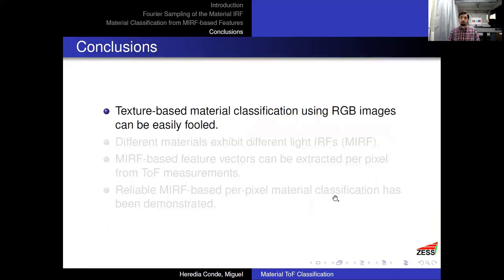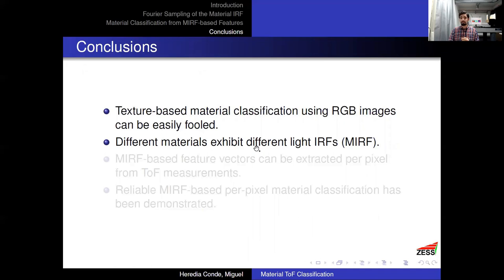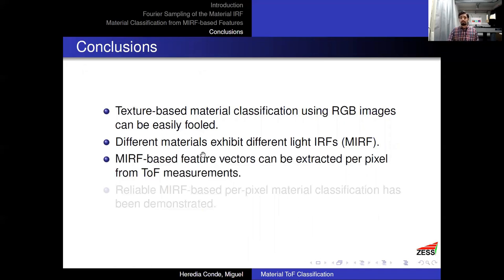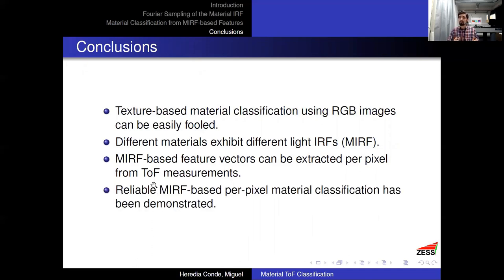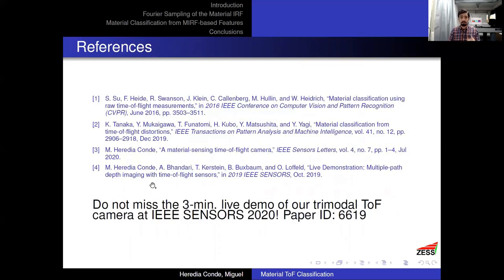As a conclusion: texture-based material classification relying only on RGB images can be very easily fooled. Fortunately, different materials exhibit rather different light IRFs — material-related MIRFs — and these MIRFs can be used to generate feature vectors for material classification. We have demonstrated MIRF-based, per-pixel, real-time material classification using an off-the-shelf time-of-flight camera with a custom framework. Thank you for your attention, and please do not miss our three-minute demo of this camera.